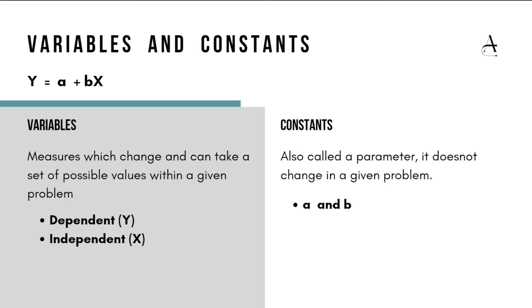Examples of constants include the speed of light, the value of pi, and the gravitational constant. Coming back to variables, there are two types: dependent and independent. Independent variables change on their own, while dependent variables change in response to changes in the independent variables. In the equation y = a + bx, x is the independent variable and y is the dependent variable — x changes on its own, and changes in y happen because of changes in x.